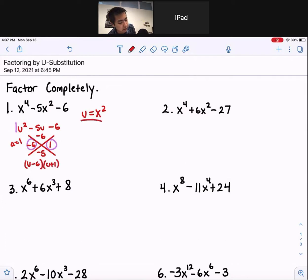And then you're substituting this in for the u, so it's not u anymore. It is x squared minus 6, x squared plus 1. And that's your first answer.